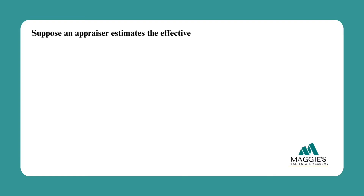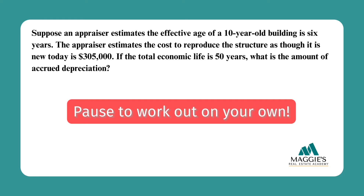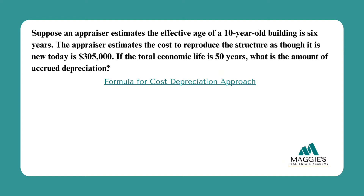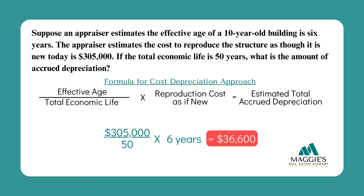An appraiser estimates the effective age of a 10-year-old building is 6 years. The cost to reproduce the structure as new today is $305,000, and the total economic life is 50 years. What is the amount of accrued depreciation? The formula is: effective age divided by total economic life, multiplied by the reproduction cost as if new. So $305,000 divided by 50 years, then multiplied by 6 years, gives a total accrued depreciation of $36,600.